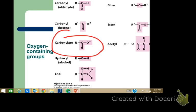Remember from general chemistry: -ate on the ending means it's negatively charged — like sulfate, sulfite, phosphite, phosphate, nitrite, nitrate. Whereas if it ends in -ium, it's usually a metal or positively charged — like ammonia, magnesium, sodium.